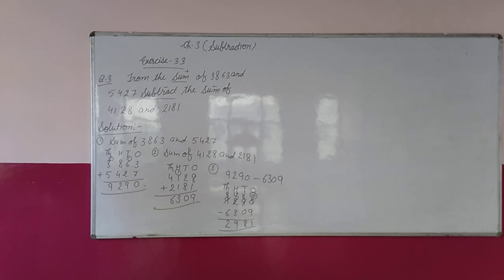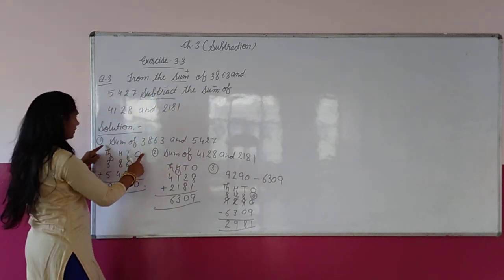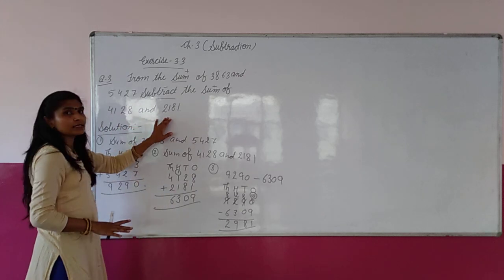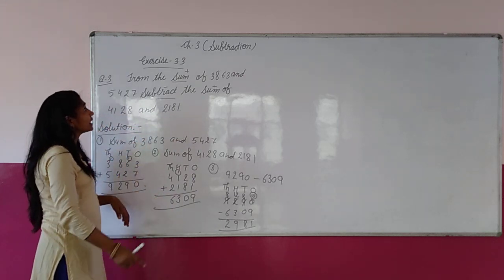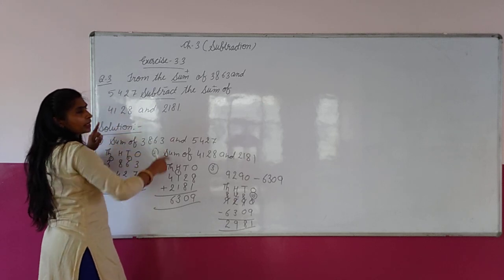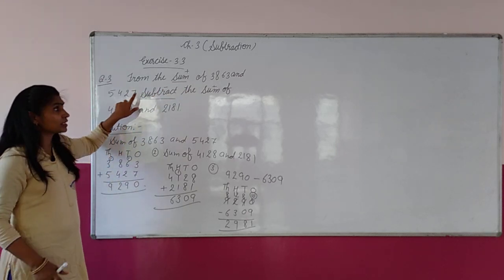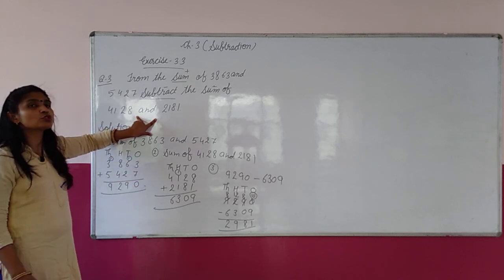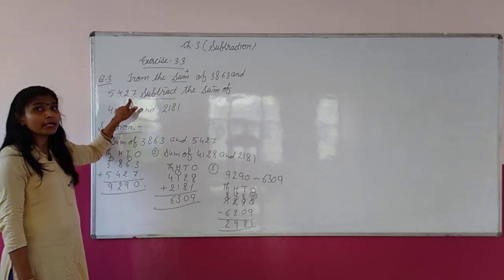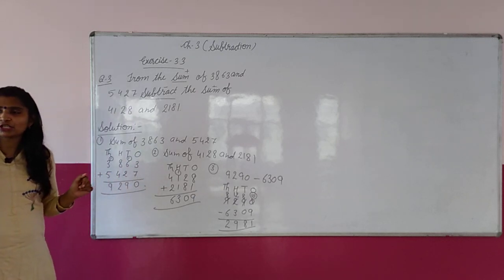The answer is 2,981. क्या question था? From the sum of these and these — इन दोनों का पहले sum करना है. First work: sum of 3,863 and 5,427. Second work: sum of 4,128 and 2,181. Third work: जो दोनों के answers आए उनको subtract करना है. That is the complete solution.